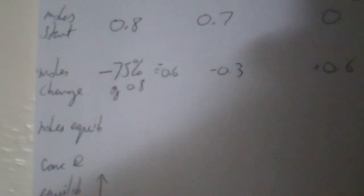So eventually to work out moles at equilibrium, you're going to do 0.8 minus 0.6, work it out here for this column here.